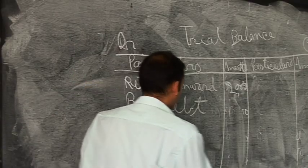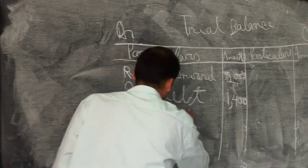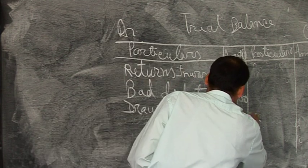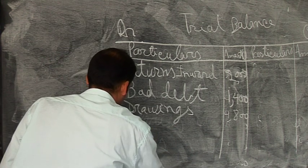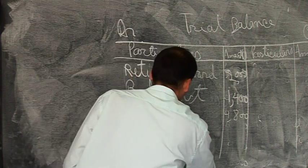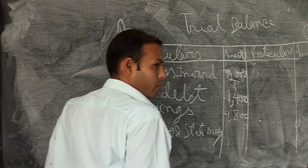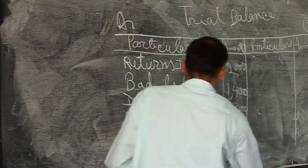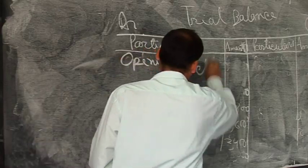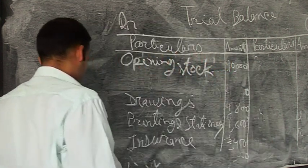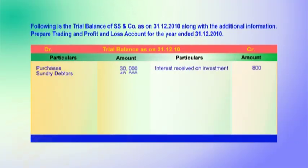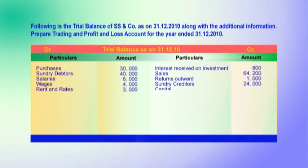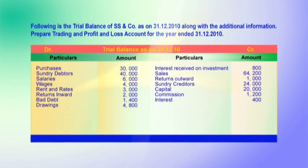Next items on the debit side of the trial balance: bad debt 1,400; drawings 4,800; printing and stationery 1,600; insurance 2,400; opening stock 10,000; administrative expenses 2,400. Last item on the debit side of the trial balance: furniture 4,000. So this is the complete debit side of the trial balance.